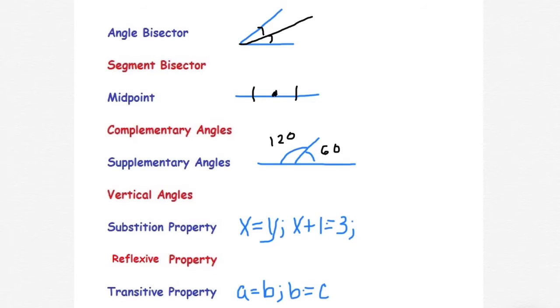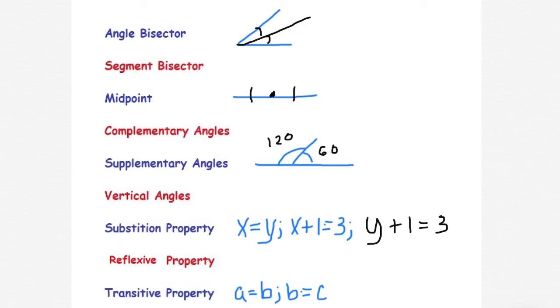An example of the substitution property: if I say x is equal to y and then I say x plus 1 equals 3, I can also say y plus 1 equals 3. I can substitute y where my x was. That's the substitution property.